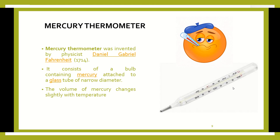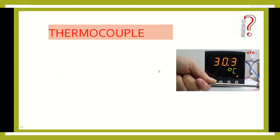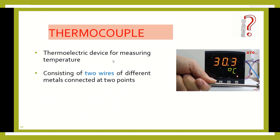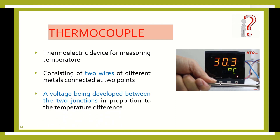The second device is the thermocouple, used for measuring systematic body temperature. It has two wires made of different metals connected at two different points. A voltage is developed across the two junctions, and we can measure the temperature based on that voltage.